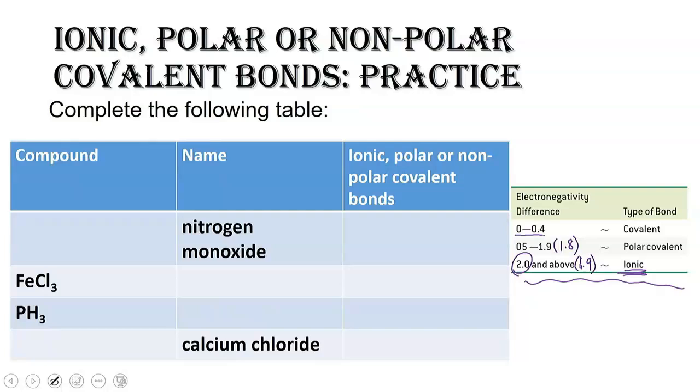All right, so let's fill out this table. I will do two of them for you. And you do the other two on your own. And I'll come back and give you the answers. So we've got a little practice with naming and writing names of compounds. And we're going to determine whether the bonds are covalent, polar covalent, or ionic. I'll do the first two for you. And then you can do the other two and I'll come back and give you the answer.